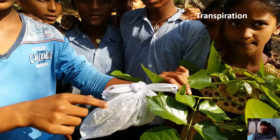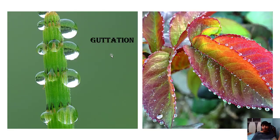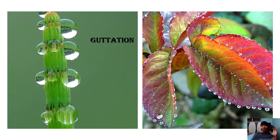Another process is guttation — excess water present in the plant is removed in the form of droplets. You can observe droplets deposited on the surface of a paddy leaf and also the variegated leaf from the croton plant. These droplets come out of the plant. If you observe a paddy field early in the morning, you will see the guttation process. Transpiration is the removal of excess water in the form of water vapor through stomata. Guttation is when it is removed in the form of droplets.